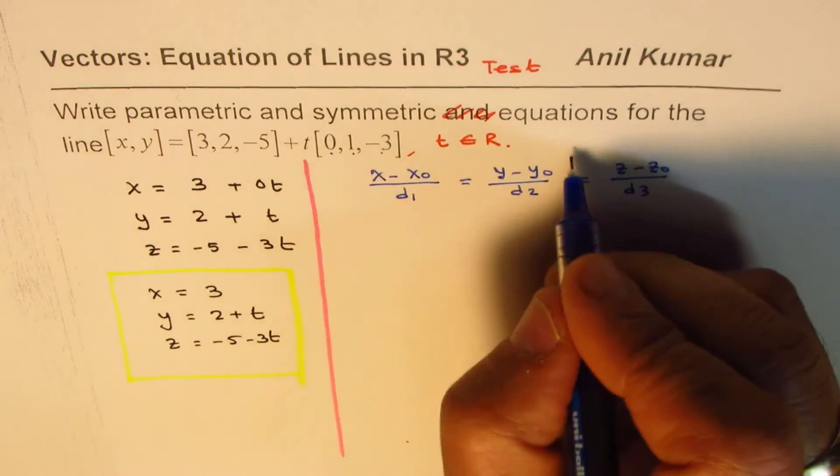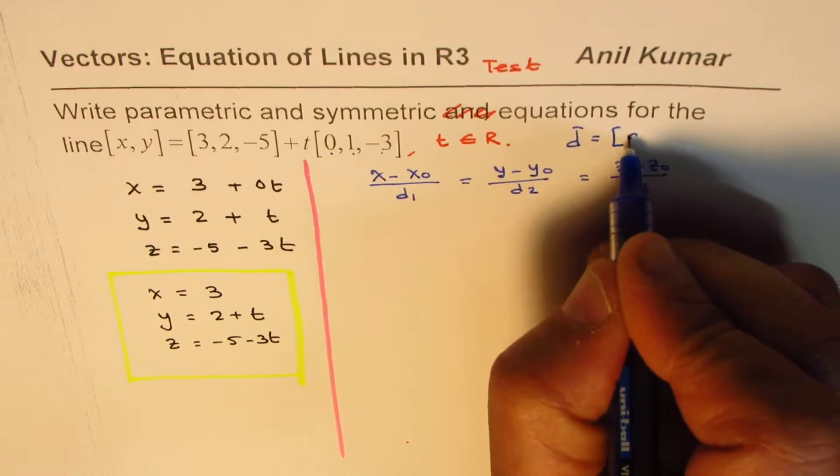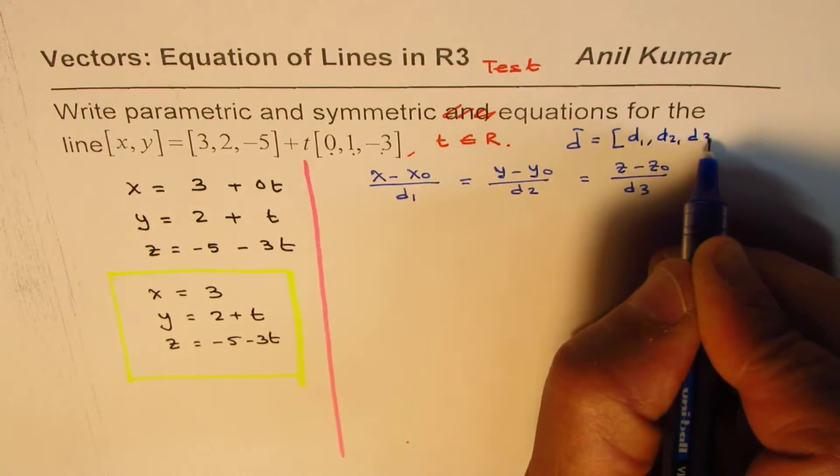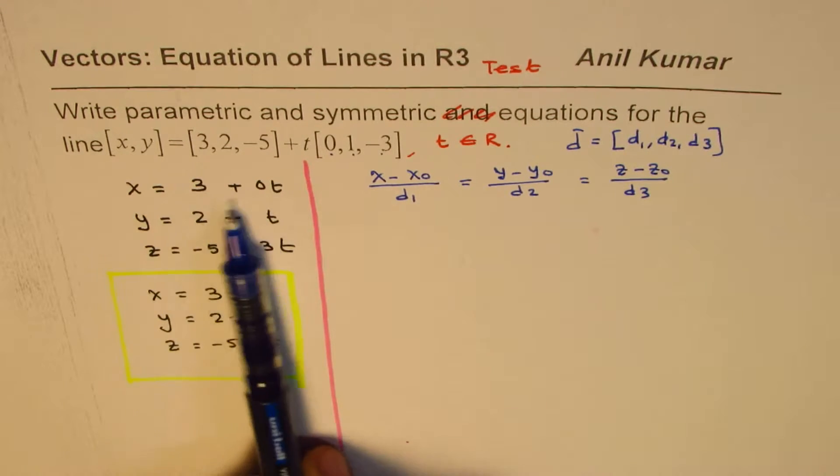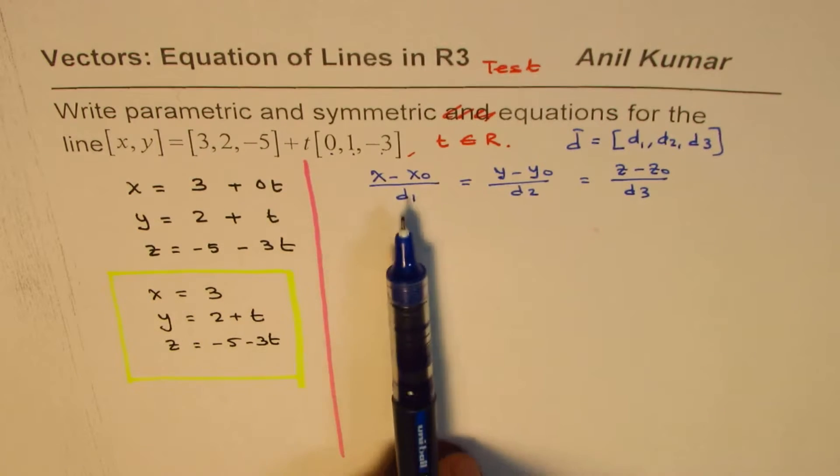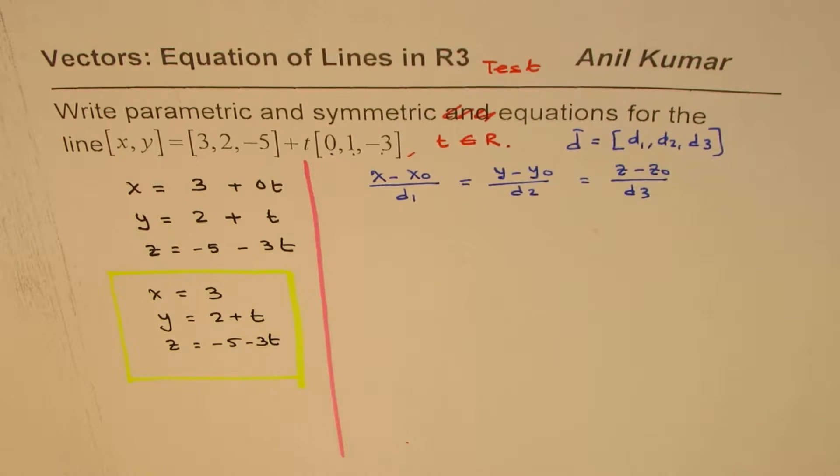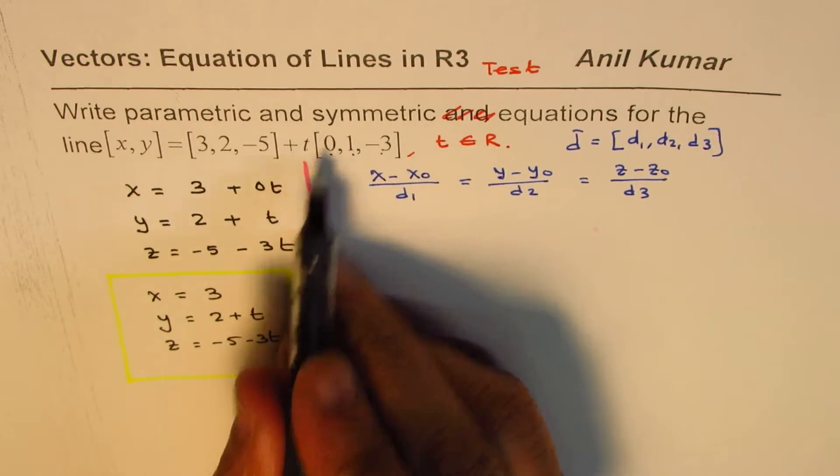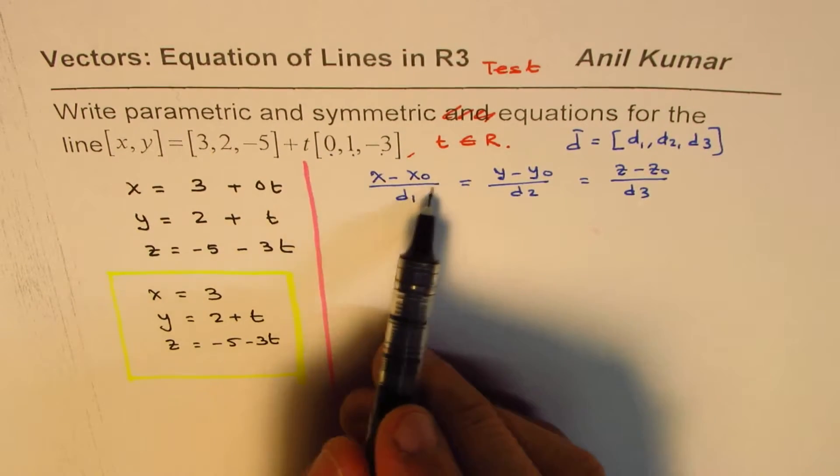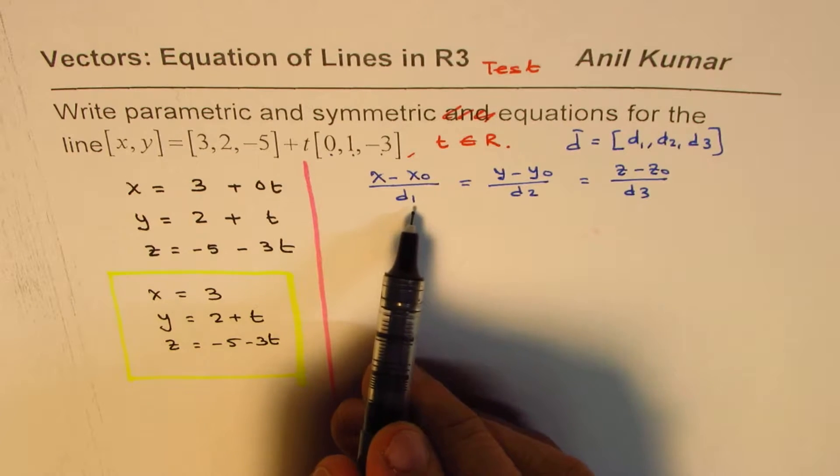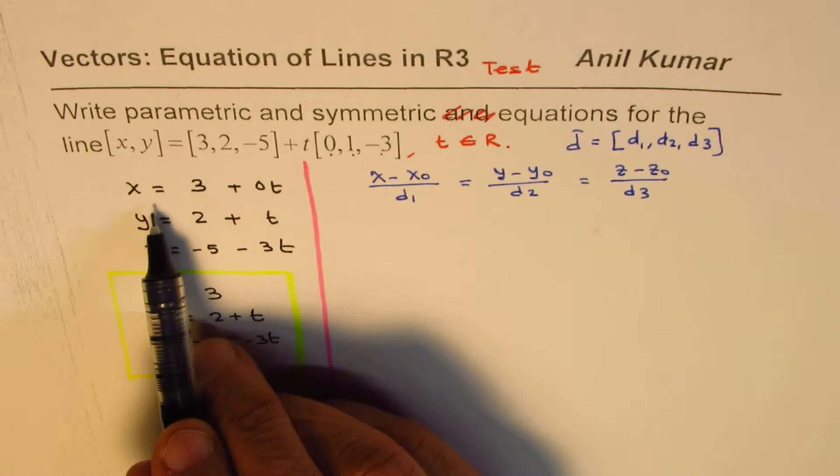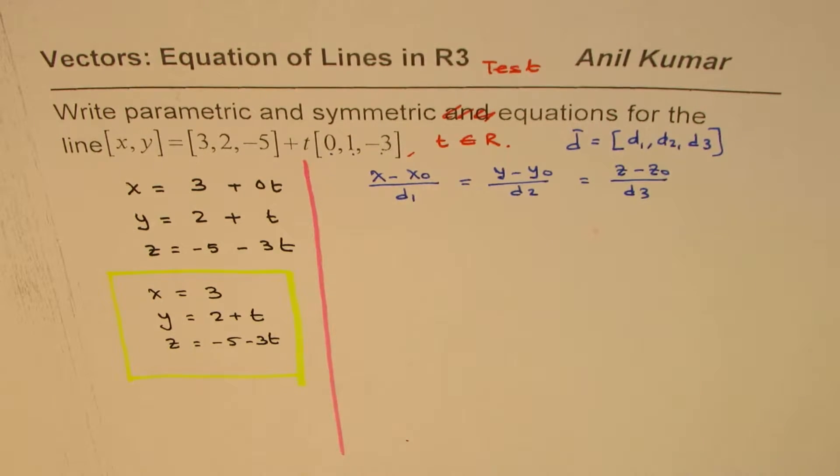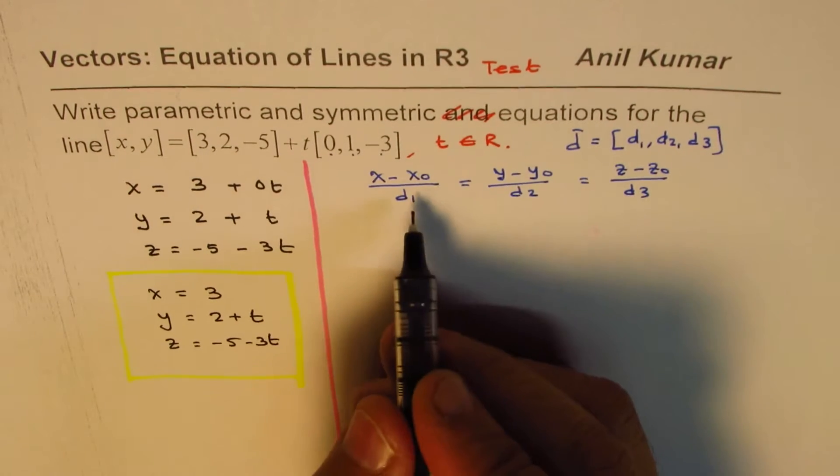Where the direction vector d could be written as (d1, d2, d3), directions along x, y, and z axis. You get this by rearranging these values of t and then equating t. Directly, I could have written this as x minus x0 divided by 0. Now, that is a difficulty. You cannot really divide by 0. So if I want to isolate t, what will I do? I will do x minus 3 divided by 0, so that's a big problem. And that is why this is your test question.